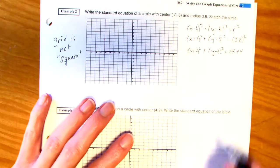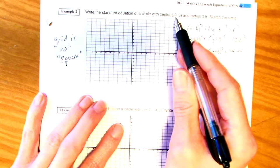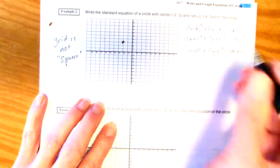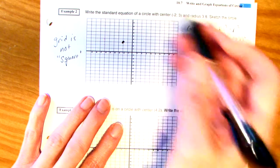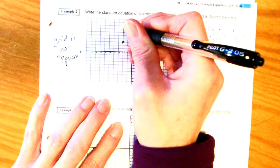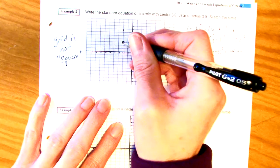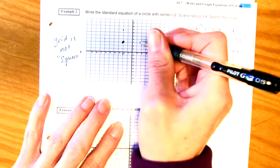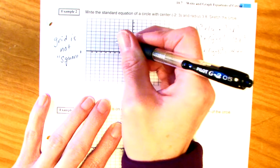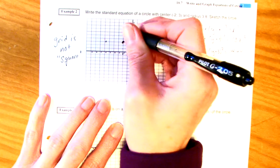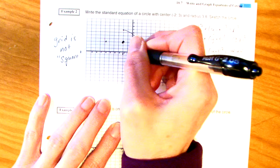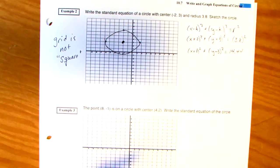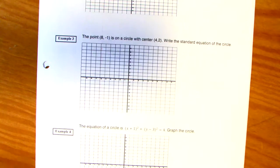Alright, so what you're going to do is, we're going to mark the circle, the center, at negative 2, 3. And we have to go up about 3.8. So, 1, 2, 3. So, right about there. Down about 3.8. Over 3.8. And over 3.8. And then kind of make your circle looks like a football. Okay, and remember, our graph here is not square, so. Let's do another.